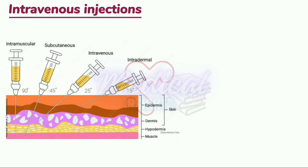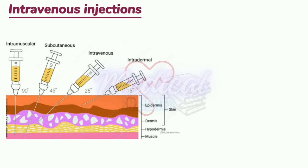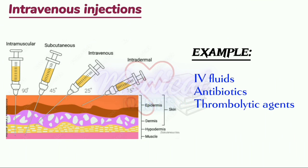The injection angle should be 25 degrees. Examples for intravenous injections include intravenous fluids, antibiotics and thrombolytic aids.